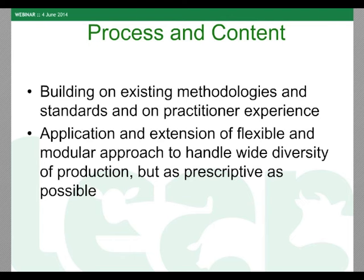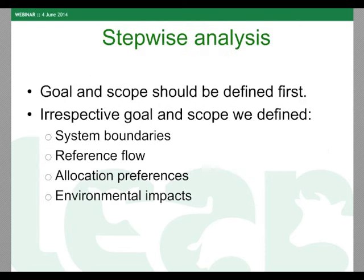We said we need flexibility, but we try to be as prescriptive as possible — only in those places where you can indeed be prescriptive. We also have some contentious areas where we give recommendations but also say other options should be explored. In a life cycle assessment you first go to a goal and scope definition, which affects system boundaries, reference flow, and allocation in further steps. Irrespective of goal and scope, we came up with some predefined boundaries and flows.